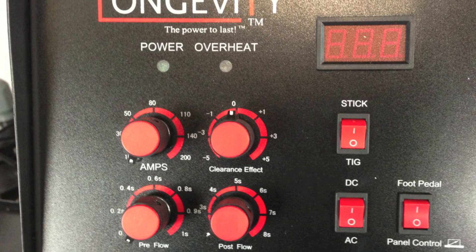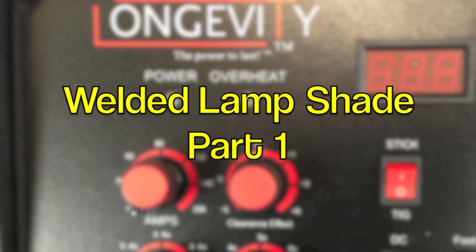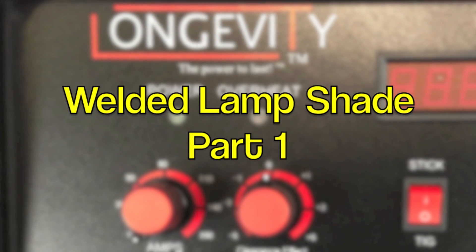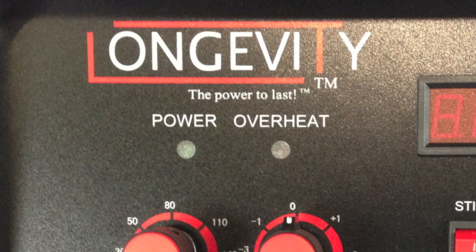Hello and welcome to the Longevity Learning Lab. Today we're going to use the TIG Weld 200SX to weld up a carbon steel lampshade using some punched out material that I got from a friend at a machine shop.